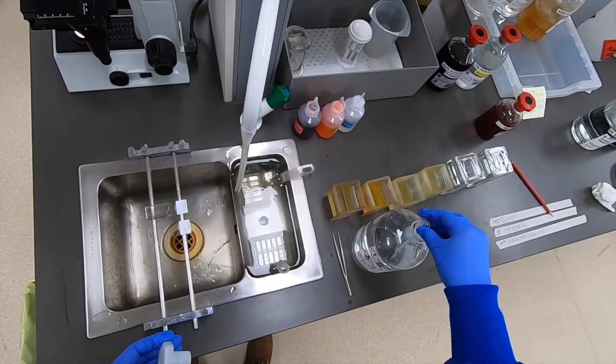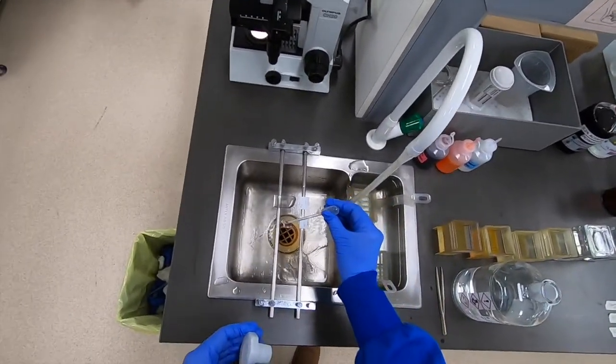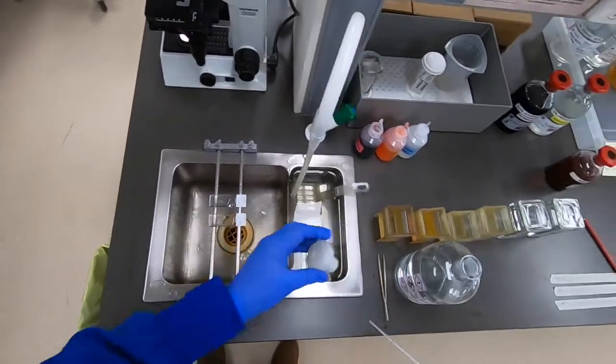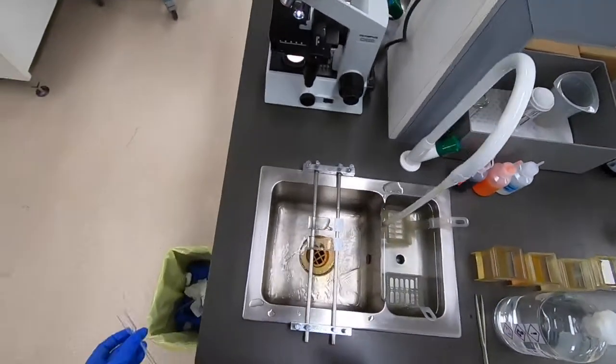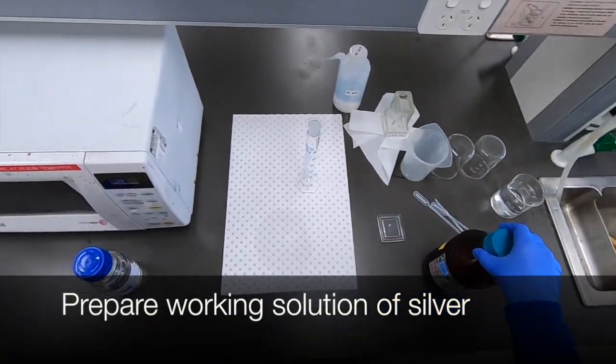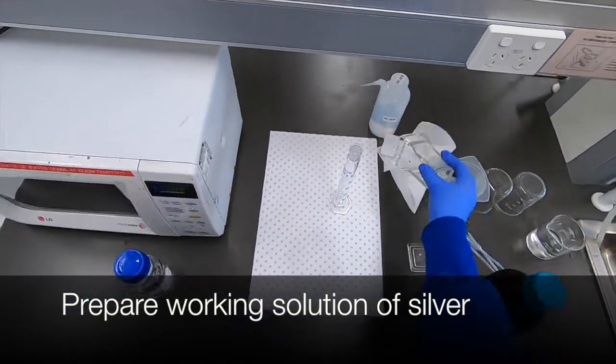Then once they're bleached you simply wash the slides well in tap water. And then at that point whether you're doing GPAMS or Grocot's, the slides are all basically sitting in water. And it's at this point you can now turn your attention to preparing the silver solution.